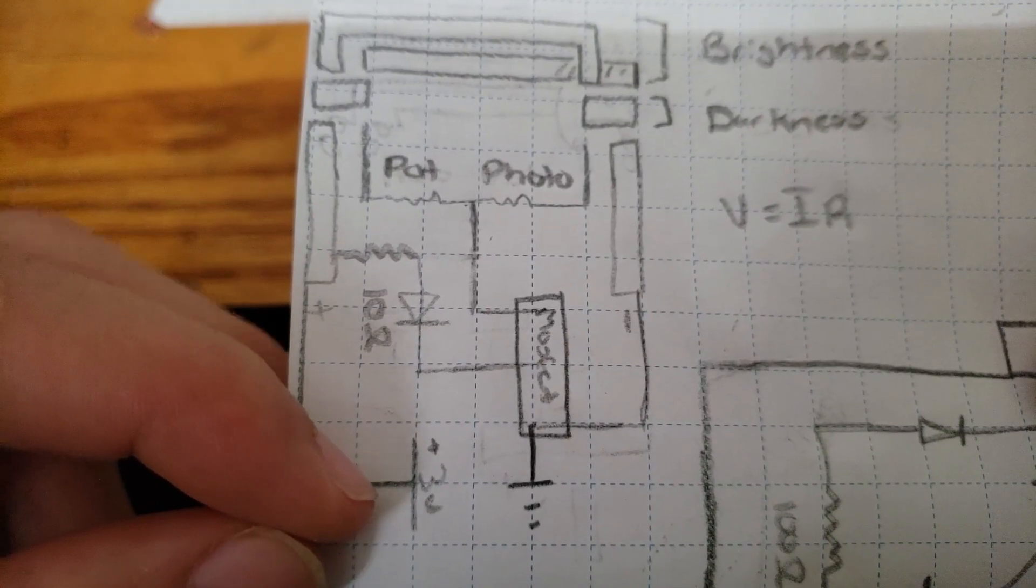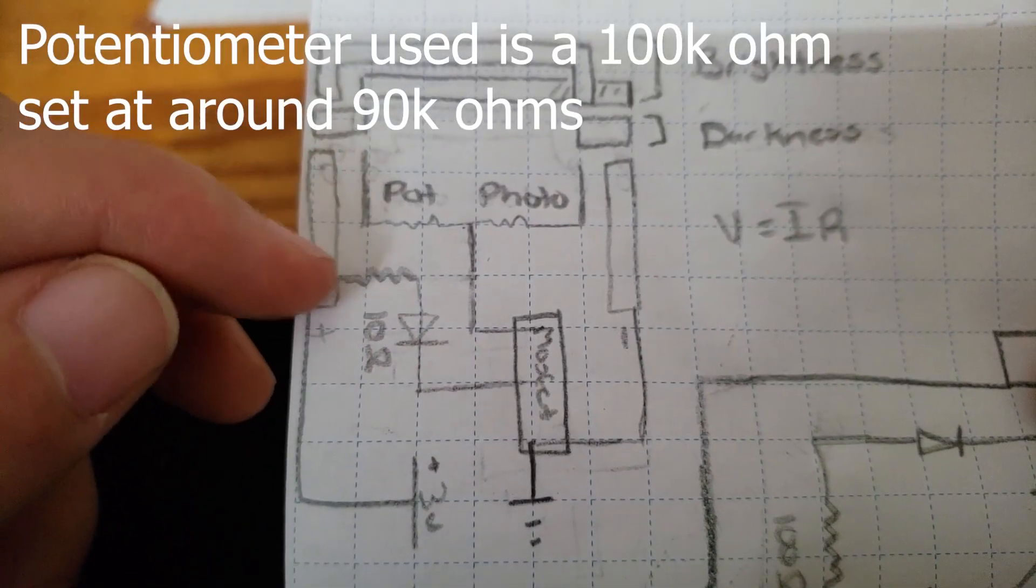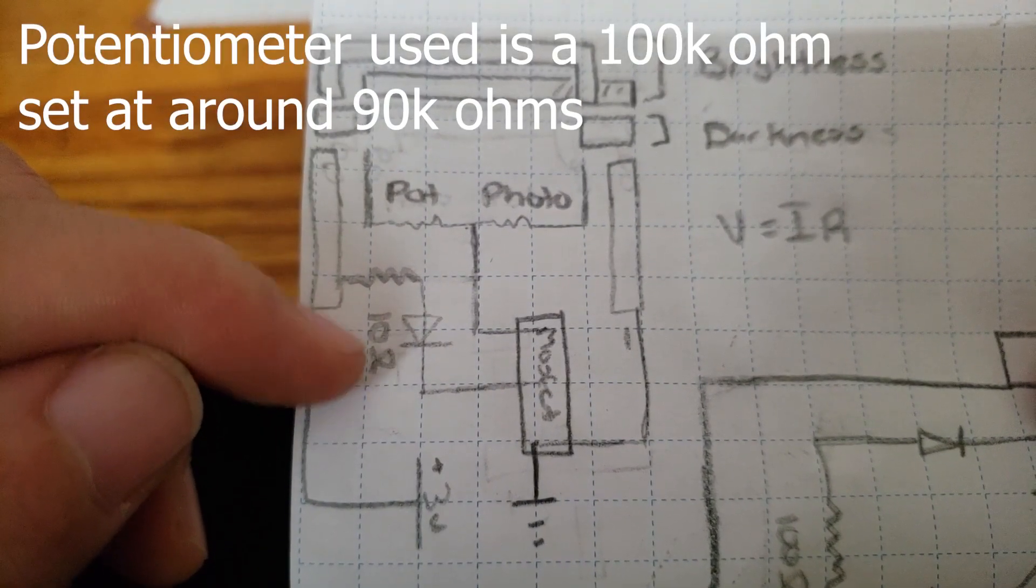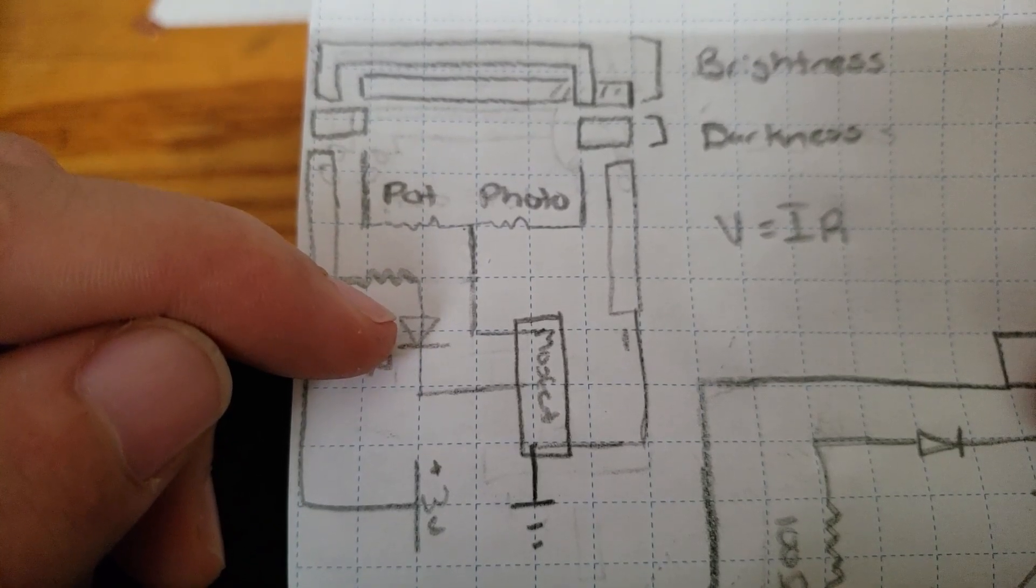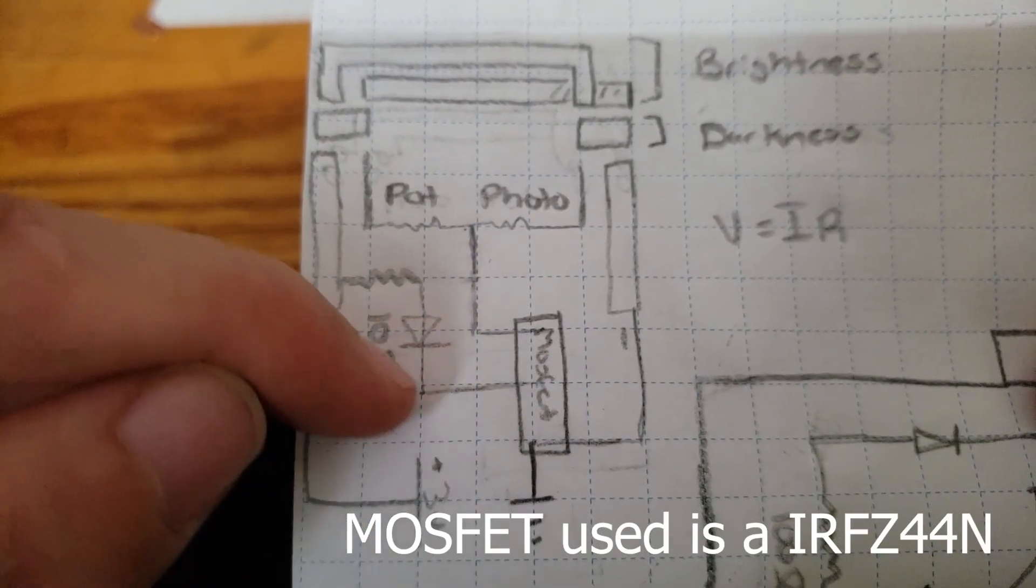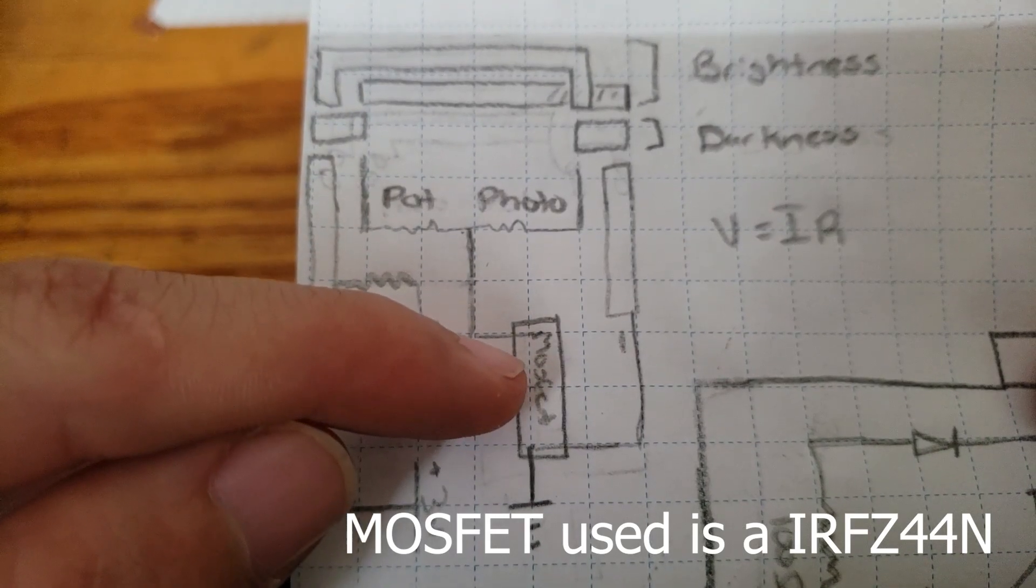So here's the circuit. It has three volts positive here going up to a pad. From the pad is a 10 ohm resistor here connected to the LED. And from the LED, it's connected to the drain of the MOSFET.